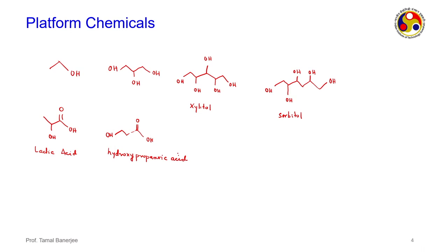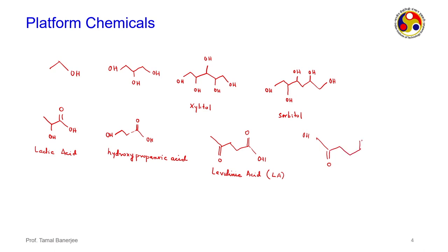Then there is levulinic acid, abbreviated LA, which is an important precursor for the production of several polymers, plastics, and plasticizers. It has a double bond in its structure. Then succinic acid is one of the most important platform chemical precursors.